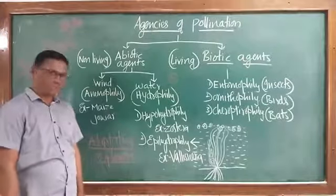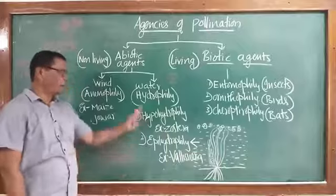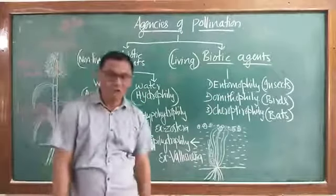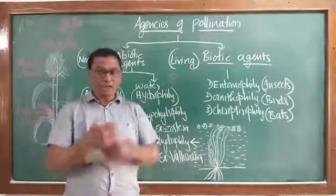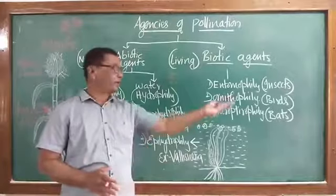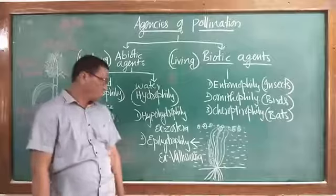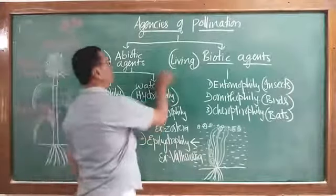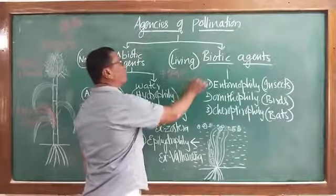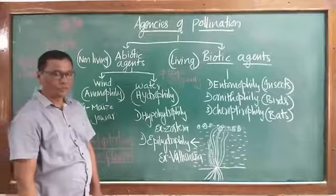To summarize adaptations in hydrophilous flowers: the flowers are small, inconspicuous, colorless, and covered by wax making them unwettable. The pollen grains develop their own specific gravity by producing starch grains, which determines whether they float on the surface or move below the surface of the water.